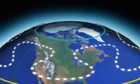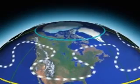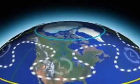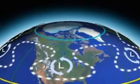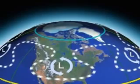Warm air pushes poleward, while troughs of cold air, brought south, are pinched off, leaving pools of cold air in the mid-latitudes.